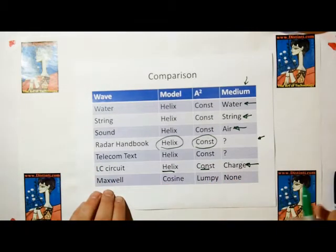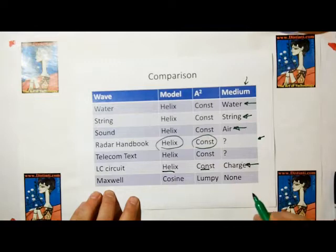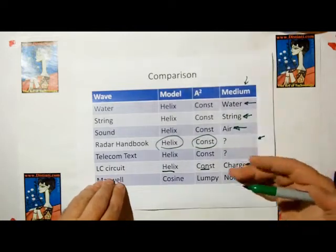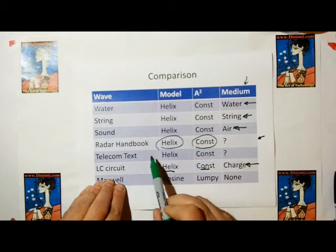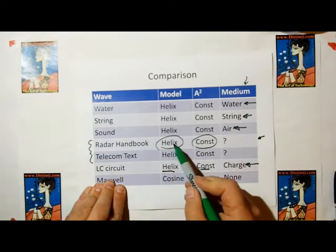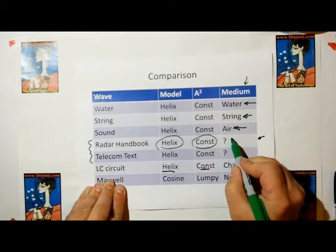And then we look at Maxwell's, oh crap, totally different. Maxwell is a cosine wave. Its energy is lumpy over time, and we don't discuss the medium. Waves just created. These electric and magnetic fields just create themselves without regard to a medium. All other wave phenomenon require a medium, and what we like to have a model for light. It's a helix like all the other wave models. And so, we should look for a medium.